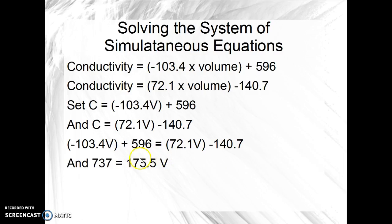We then add the same thing to both sides in order to combine these like terms. And we get 737 equals 175.5 times the volume in drops. We then solve for V and we get 4.2 drops.